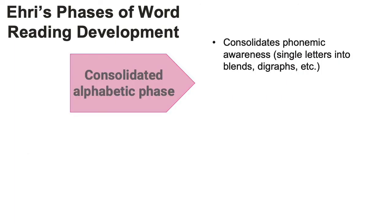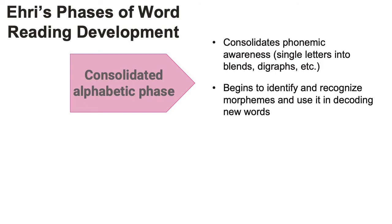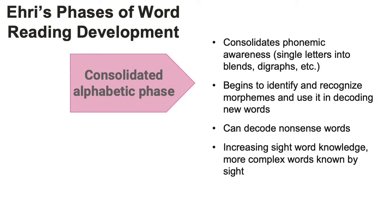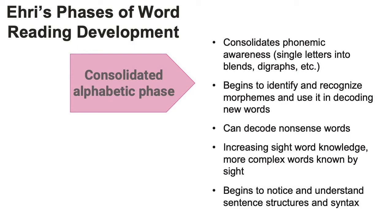Next is the consolidated alphabetic phase. This is when children consolidate and generalize their phonemic awareness, expanding from recognizing correspondences between individual phonemes and graphemes into recognizing common blends, digraphs, diphthongs, etc. In this phase, children also start to recognize common basic morphemes like prefixes and start to use them to figure out new words. As children learn more and more about the code, they stop relying on guessing and memorization — we measure this by having them decode nonsense words, which follow conventional spelling patterns and use the same sound-spelling relationships but are not real or meaningful words. Children's sight word knowledge continues to grow and begins to include more complex and multisyllabic words. As decoding becomes more automatic, children begin to notice and understand common sentence structures and syntax.